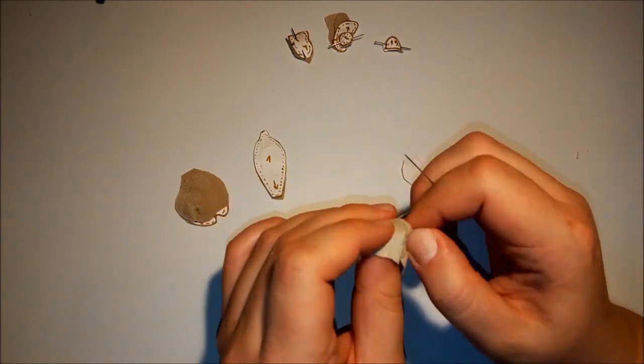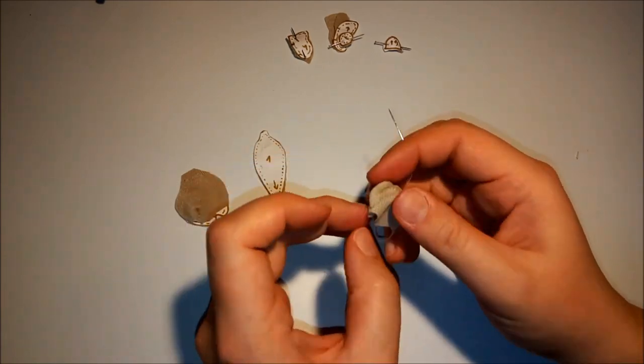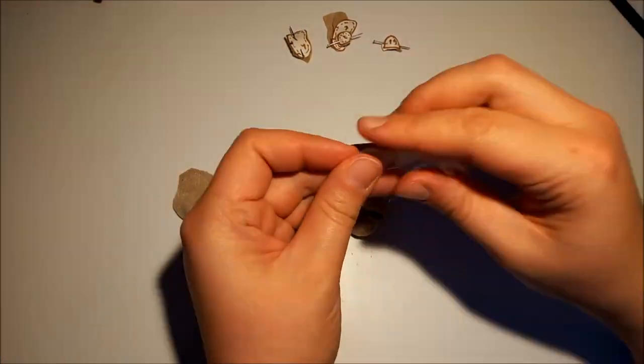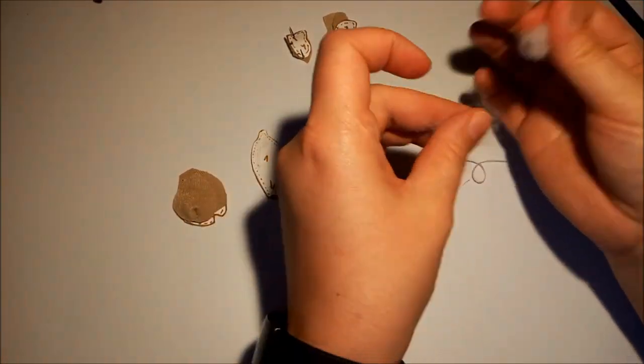As before, we turn to the right side. We leave a small hole through which we add the filling. We sew the hole.